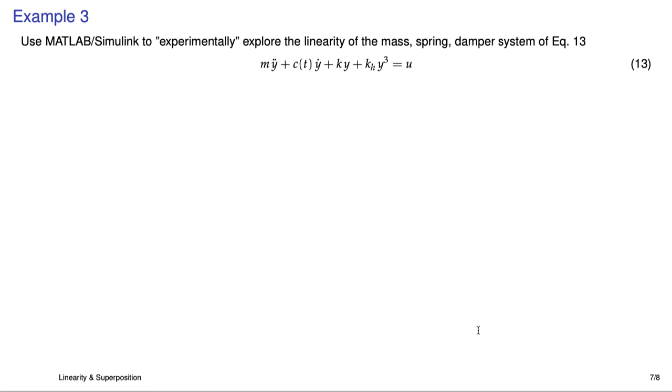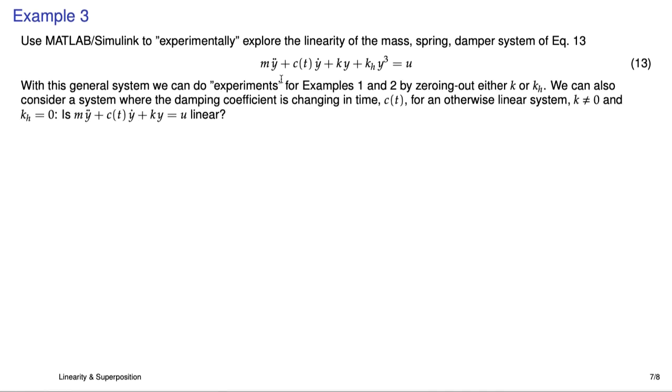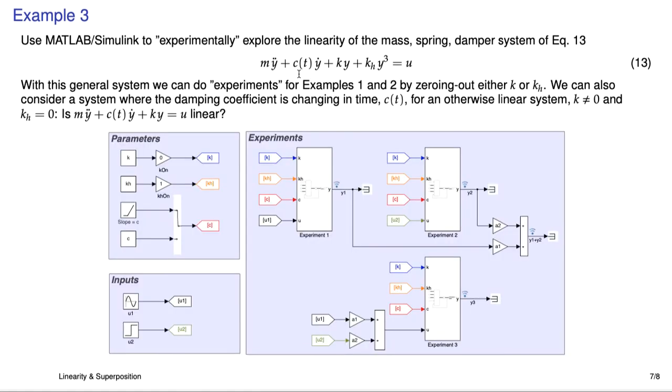So now what we're going to do is play around with some MATLAB Simulink. And we'll use this differential equation model. It's kind of fun. It has the linear stiffness and the nonlinear stiffness. And it has a neat little time-varying damping coefficient. So we can really play around with some different scenarios. So for instance, if we zero out this k, then we end up with this nonlinear expression. And we can also look at things that we haven't looked at in the math by letting c of t be something other than a constant and explore, at least experimentally, in a sense, simulation-wise, whether or not that system is linear. This is what the model looks like. I'll walk through this when I bring it up. We have some parameters over here, some inputs, and then here's our experiments. Let's get to it.